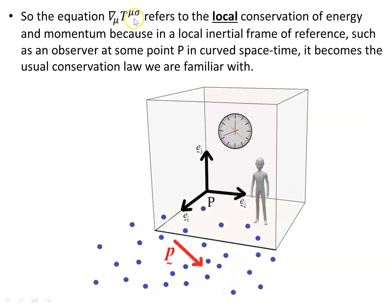The only combination of terms that gives zero divergence on the left-hand side is the Ricci tensor and the Ricci or curvature scalar multiplied by the metric. The symbol del-mu T-mu-sigma refers to local conservation of energy and momentum and does not imply a global conservation law. People see the del symbol and think it means globally true, but it's not — it refers only to a specific point P and a small region around it where it's approximately true, but not globally.